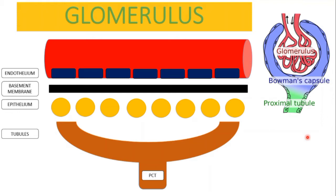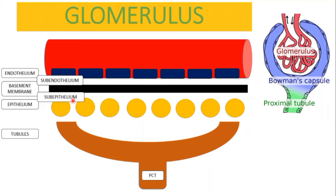Let's take the basement membrane and relate it with the endothelium and epithelium. The layer below the endothelium is the subendothelial layer, and above the epithelium is the subepithelial layer — it may be above the epithelium but it is below the basement membrane, so we call it the subepithelial layer. This is important because in nephritic and nephrotic syndrome we will see immune complexes deposited either at the subepithelial or subendothelial location.